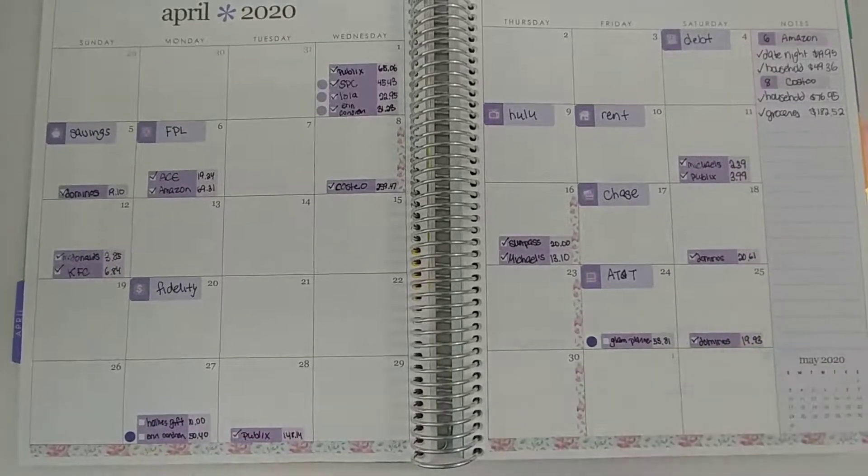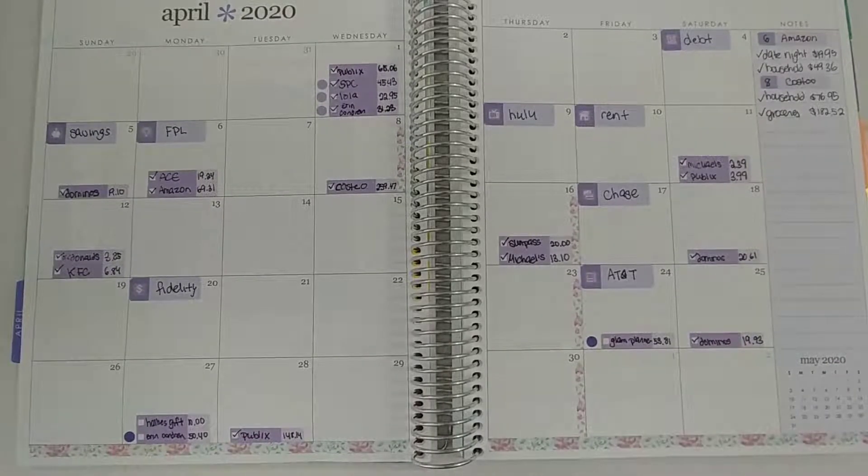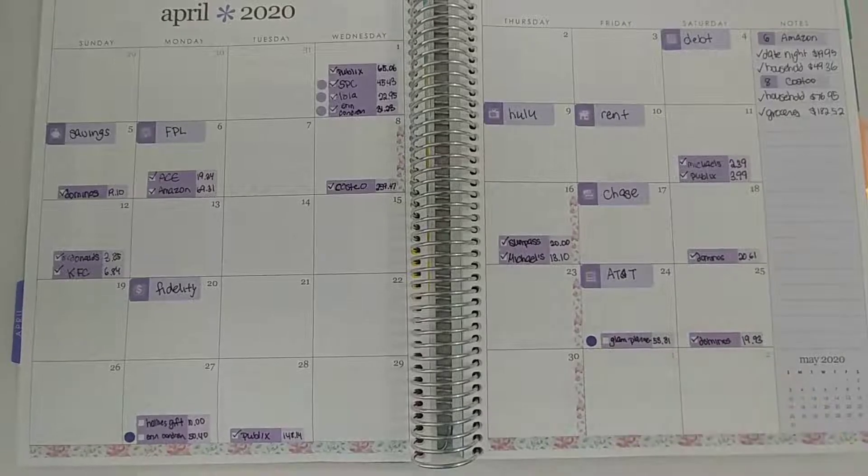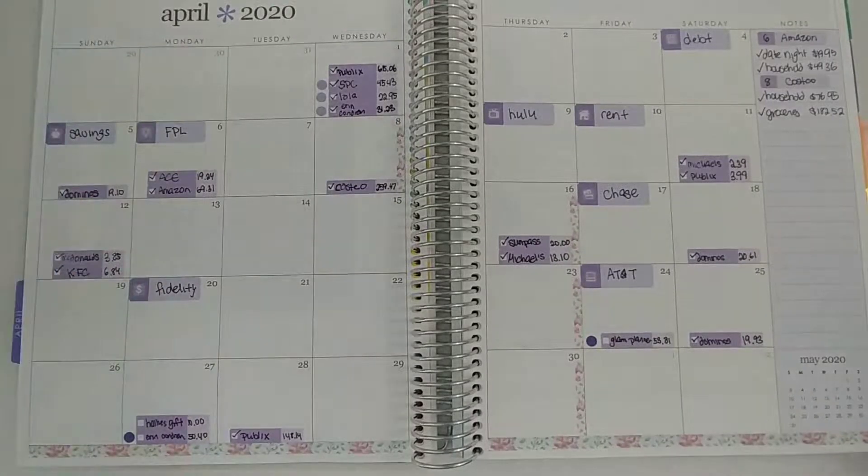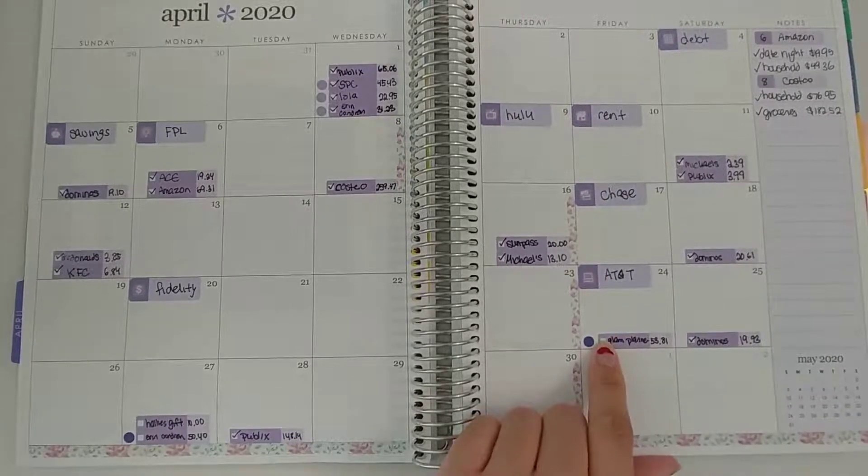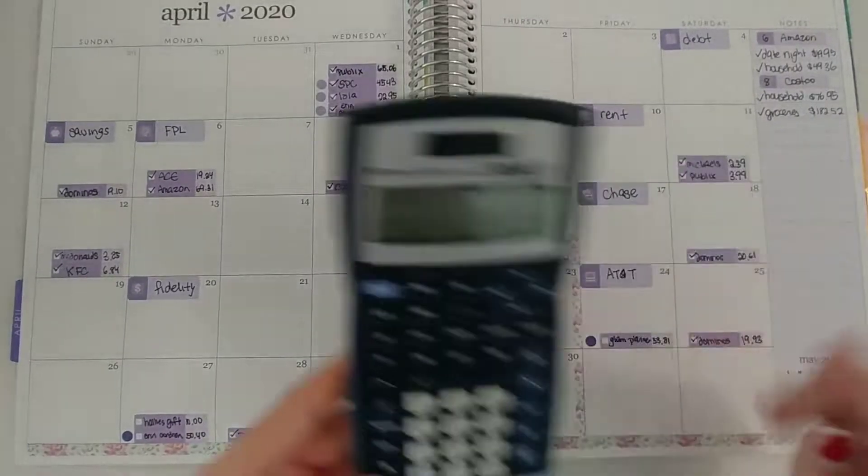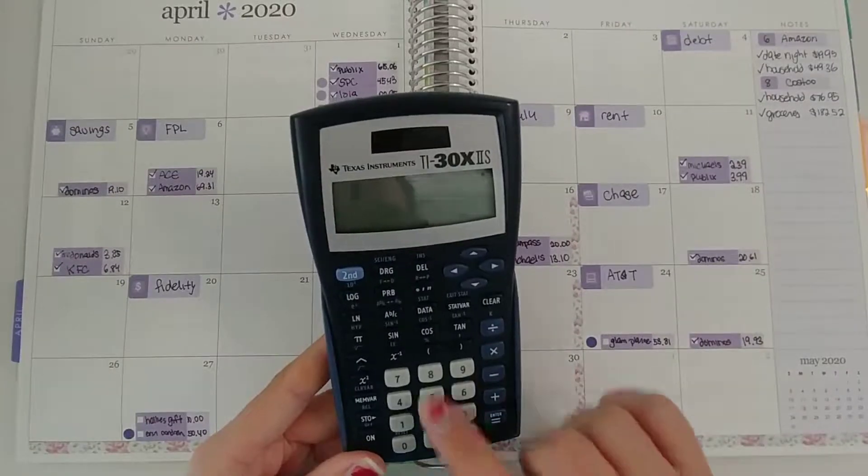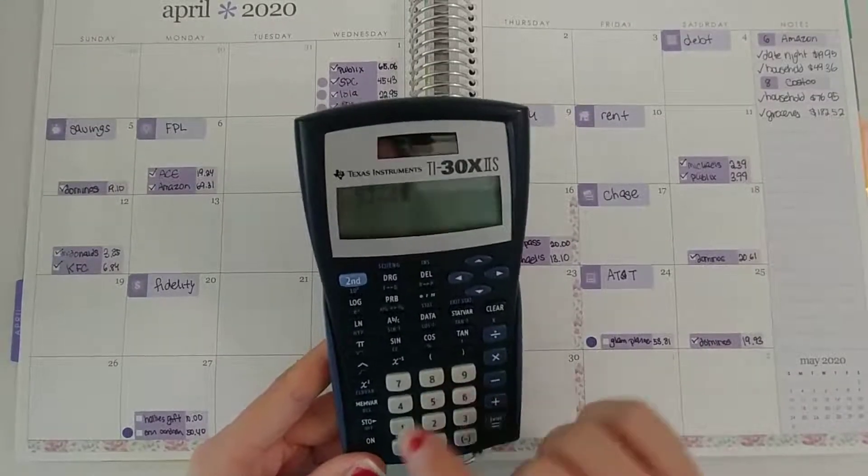Two items have already been checked off. Those were already marked in the joint budget and the remaining three are for my personal budget. So let's go ahead and mark these off. The first one that I have here is Glam Planner which is from the crafting category and that is a total of $53.81.